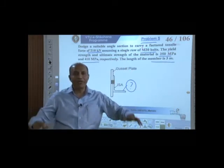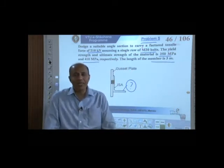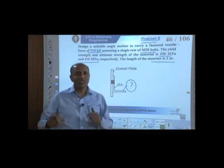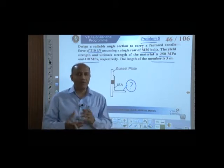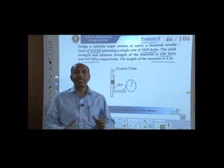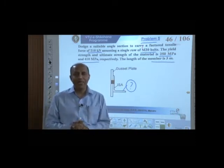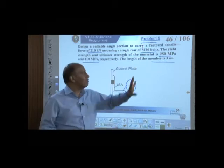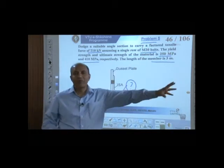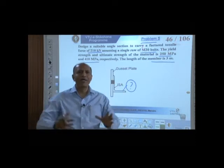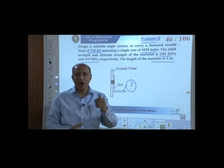The moment you see total length L given, keep in the back of your mind that we have to check the slenderness ratio of that member and compare with the appropriate code table given in IS 800:2007. Whenever length is specified in the problem, you have to calculate the slenderness ratio — that's a small part done at the end.